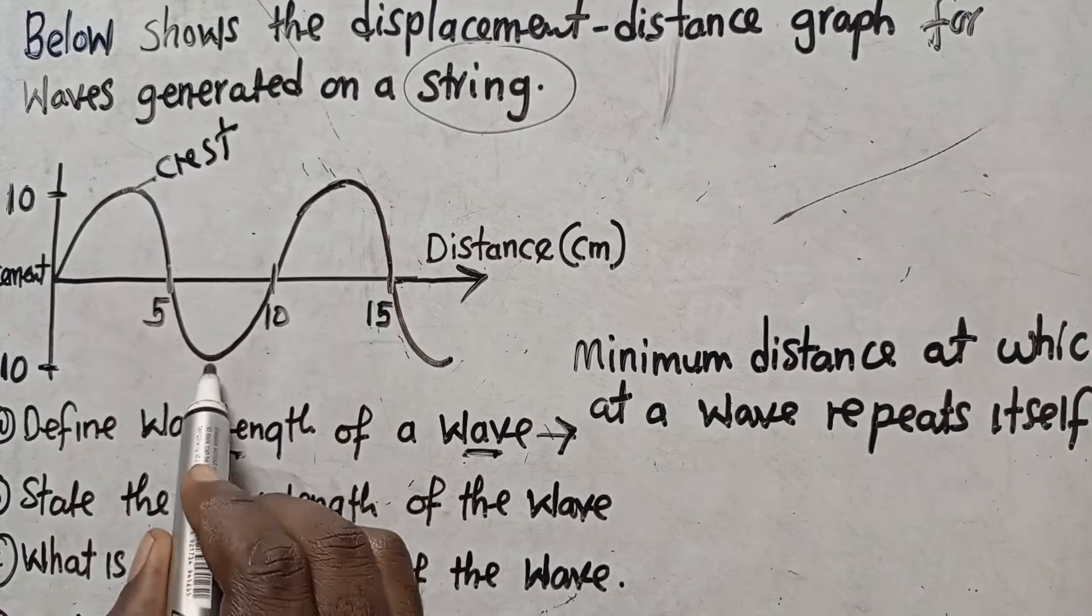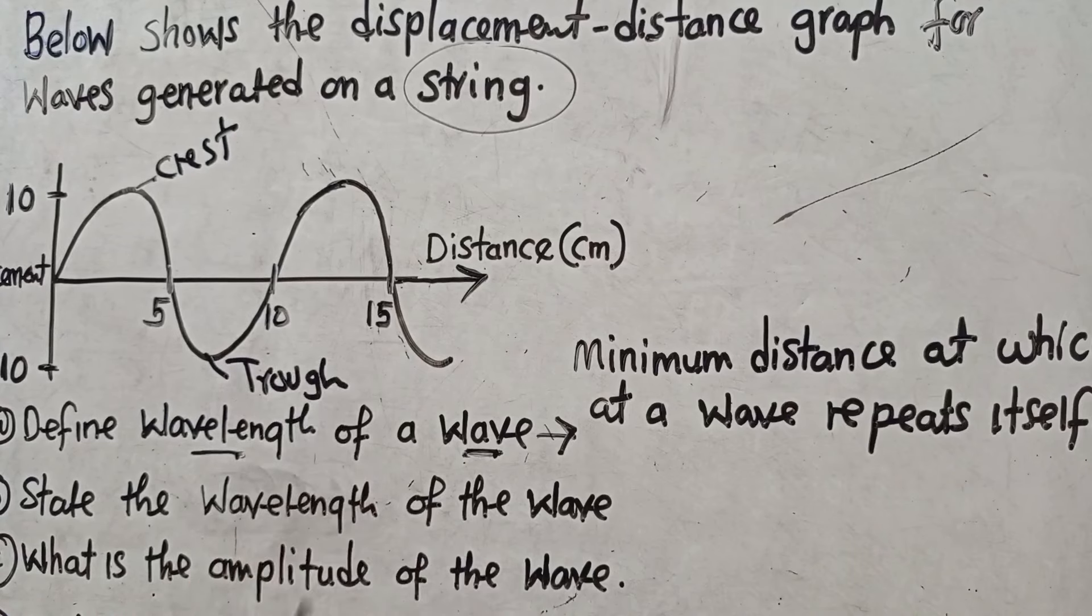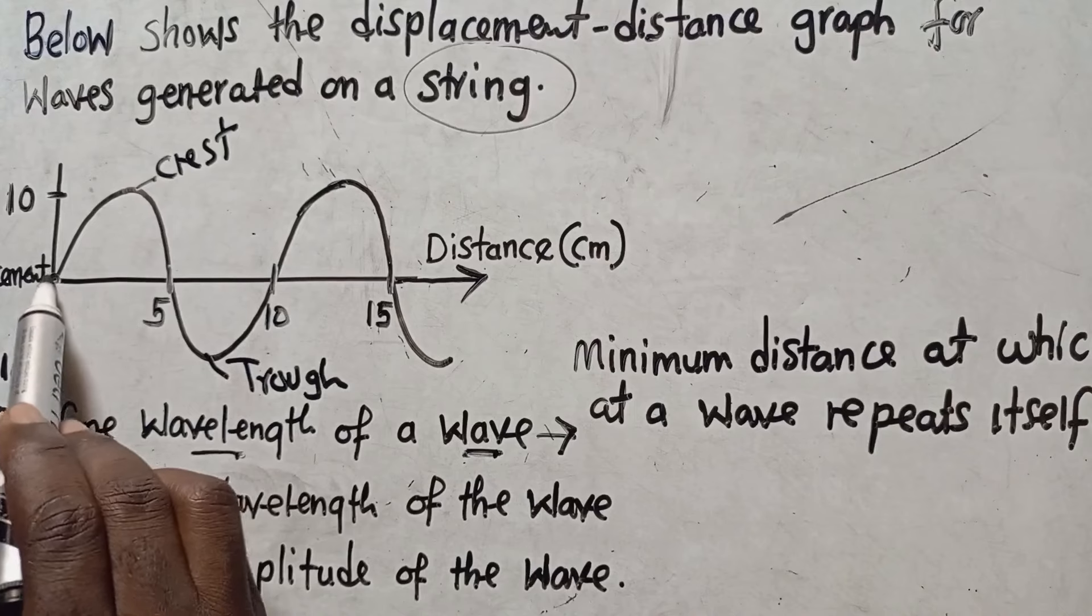So the wavelength of the wave. You know that that one on top that is called a crest and this one is called a trough. This is what you need to understand.